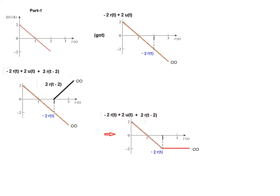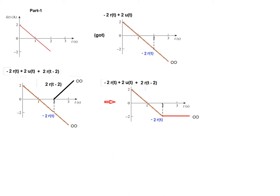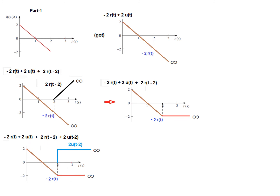The shape is now a constant line continuing to t = infinity, but we need to eliminate that constant portion. So we add a unit step function in the negative direction at t = 2, which is -2u(t-2). These two constants cancel each other, so the final result is just the desired function. The value for part 1 is: -2r(t) + 2u(t) + 2r(t-2) - 2u(t-2).